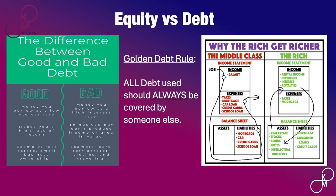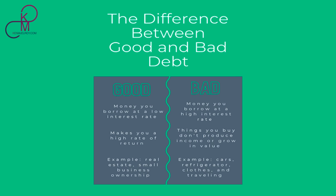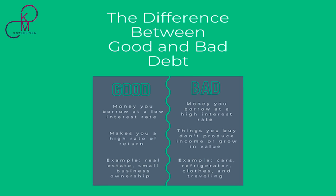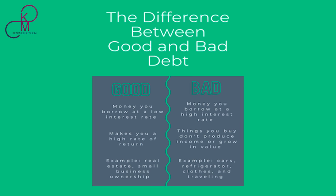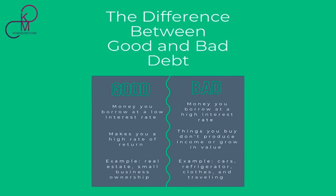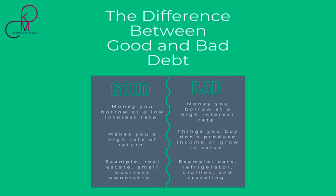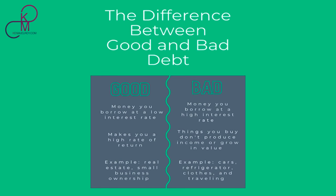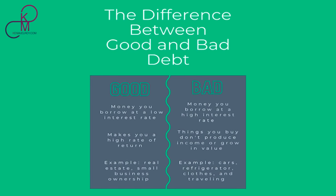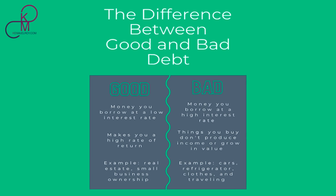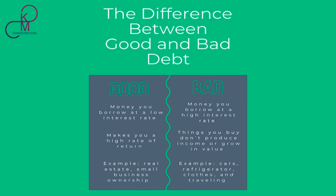On the left side here are the pros and cons of good and bad debt. Good debt is money that you borrow at a low interest rate — which is very hard to do right now — that makes you a high rate of return. Examples are real estate or small business ownership. On the right side, bad debt is money that you borrow at a high interest rate, not covered, for things that don't produce income or grow in value — or they depreciate. Examples would be cars, refrigerators, clothes, and travel.